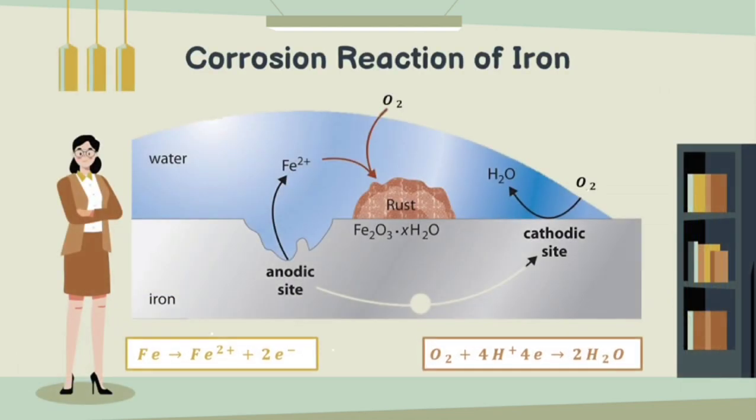This diagram shows the corrosion reaction of iron. When a droplet of water containing oxygen falls on a steel pipe, the iron under the droplet will oxidize. The electrons will reduce O₂ to H₂O at the cathodic site, while at the anodic site, the iron 2 plus will react with O₂ and H₂O and form rust.